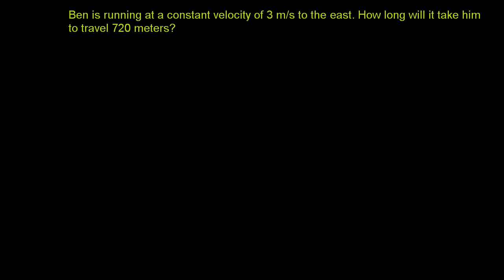Let's work through another few scenarios involving displacement, velocity, and time, or distance, rate, and time. Ben is running at a constant velocity of 3 meters per second to the east.